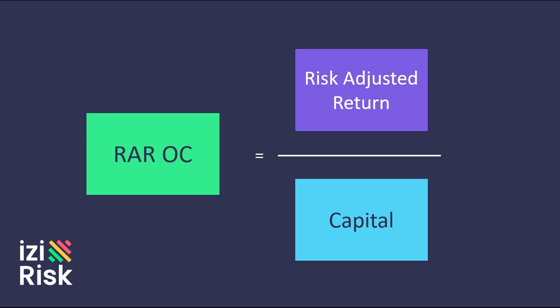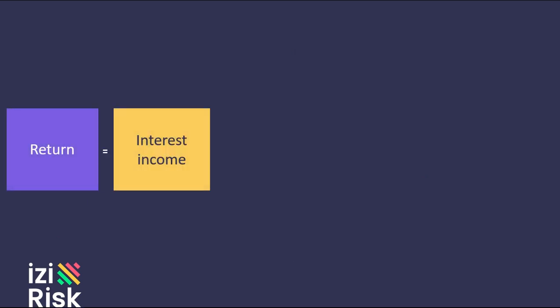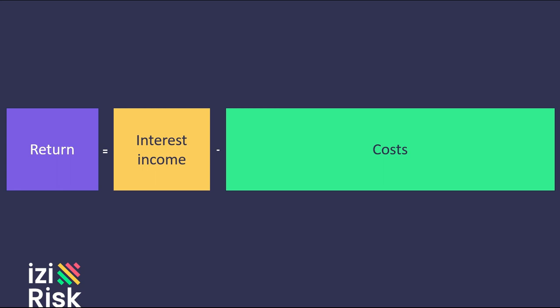Return is simply interest income minus the costs of lending money. Assuming that each operation is maintained for one year, interest income is obtained by multiplying the balance of the operation — exposure at default — by its annual interest rate.